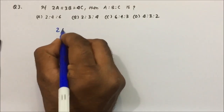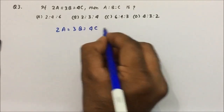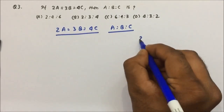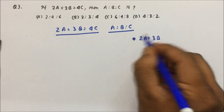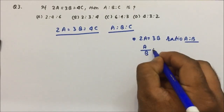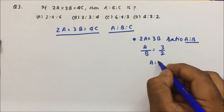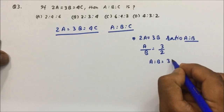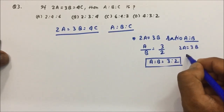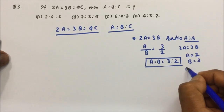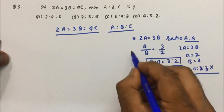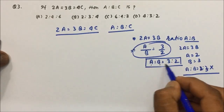Question 3: 2A = 3B = 4C, find the ratio A:B:C. Suppose we only had 2A = 3B. Then bringing A/B to one side: A/B = 3/2, so A:B = 3:2. Note that we cannot say A = 2 and B = 3 directly — that would be wrong. We have to bring it to proper form first, giving A:B = 3:2.